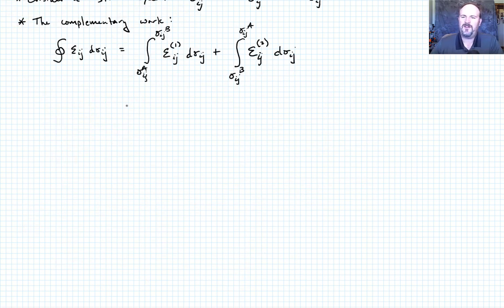So we can simplify this integral just noting that we can switch the order of integration and then we obviously make this negative but then we can bring it all under the same integral. So we can integrate, this is the integral from sigma_ij^a up to sigma_ij^b now times the quantity epsilon_ij^(1) minus epsilon_ij^(2), and we'll go say that's still times d sigma_ij.